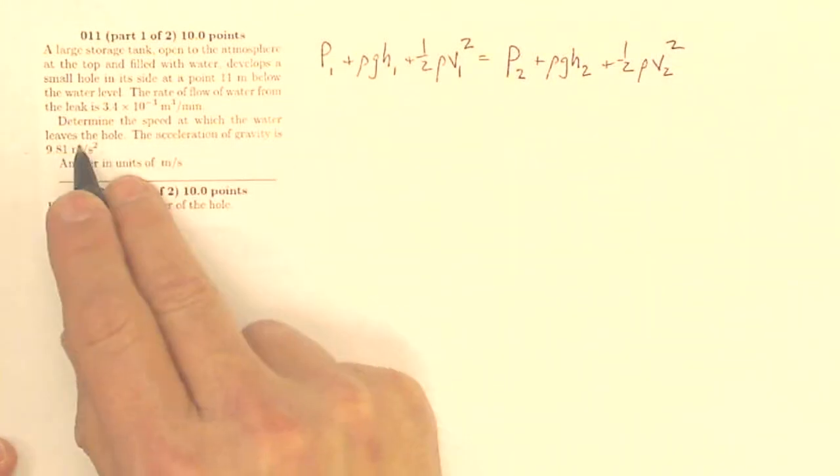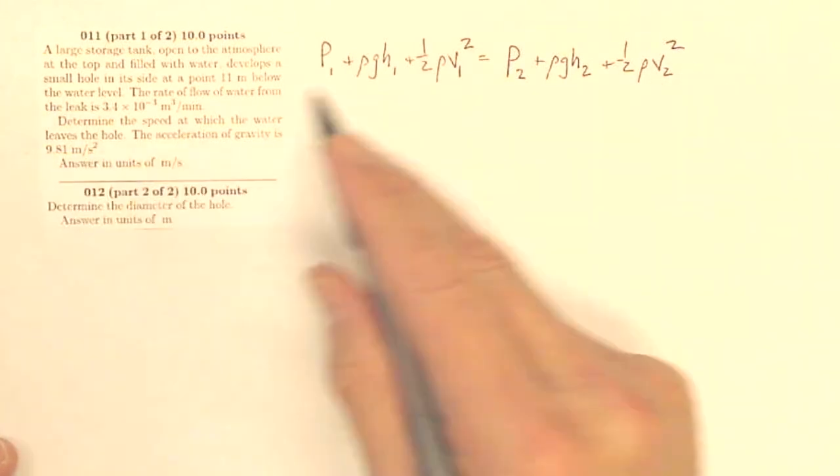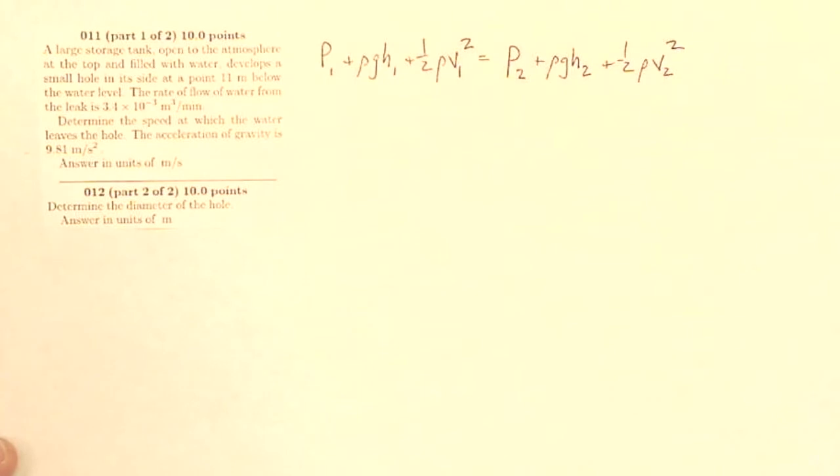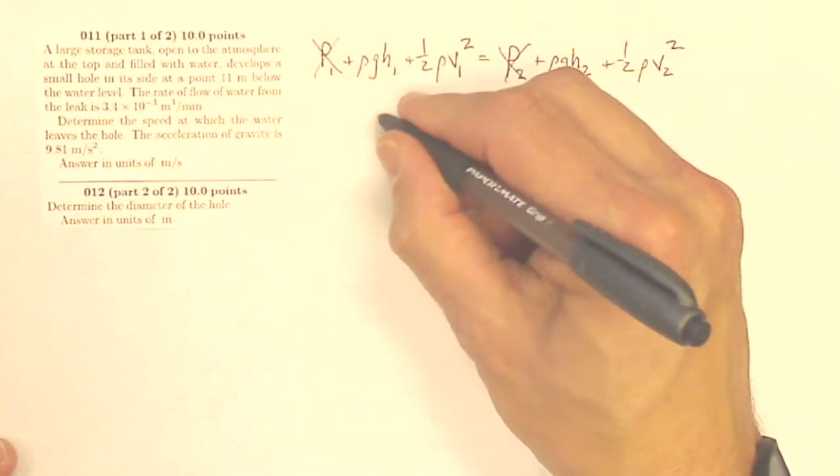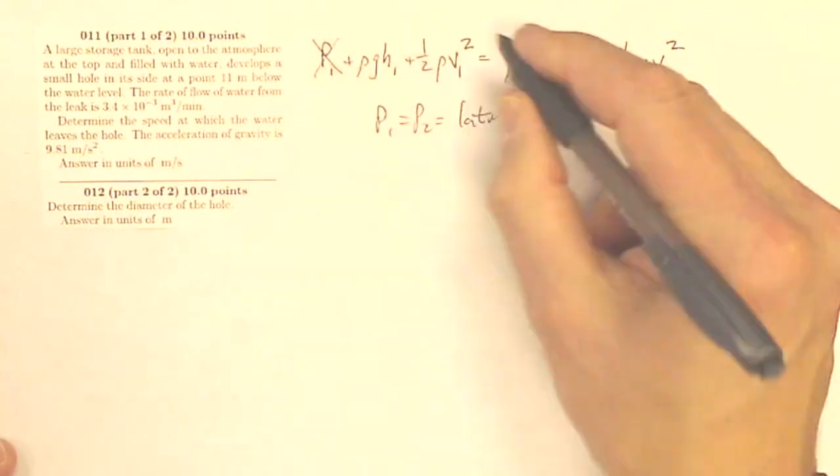So if I want to know the speed at which the water leaves the hole, I'm looking for this. But since the hole is open to the atmosphere and the large top is open to the atmosphere, I know that these go away because p1 equals p2 equals one atmosphere.